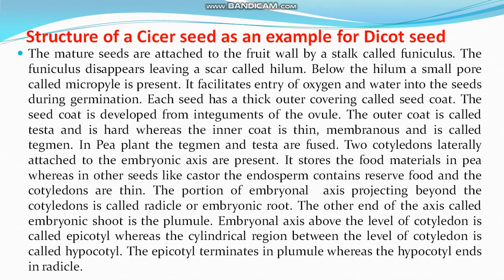The micropyle facilitates the entry of oxygen and water into the seed during germination. Each seed has a thick outer covering called the seed coat, which is developed from the integuments. The ovule is covered by two integuments: outer and inner. The outer integument is converted into the testa and the inner integument is converted into the tegmen. The testa is hard and thick, while the tegmen is thin and membranous.